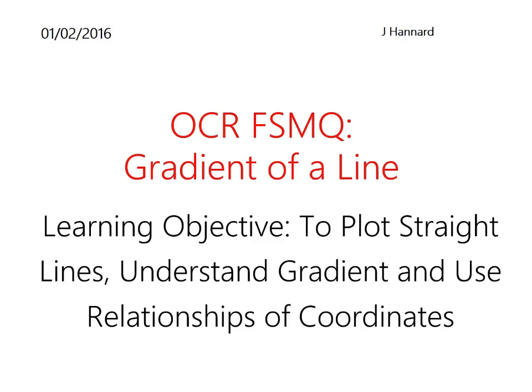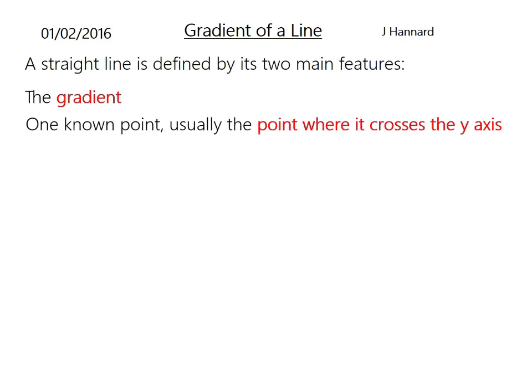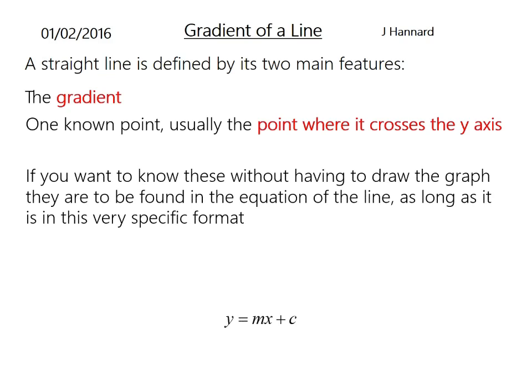There's a little bit on intersection after that as well, and the circle. So that's the next few episodes, whenever you're watching this. This could be long into the future. Let's have a look. A straight line is defined by its two main features: the gradient and a known point, which is usually where it crosses the y-axis.